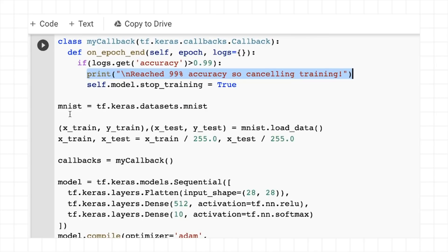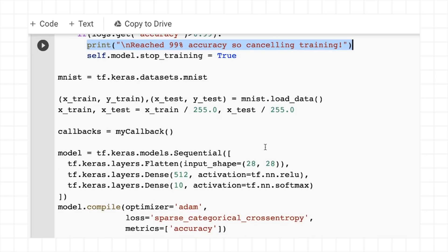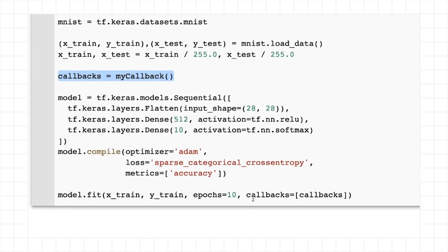So now for mnist, I can just say mnist is tf.keras.datasets.mnist, I can load and normalize my data as before. I can create an instance of my callback that I'm just calling callbacks. And then when I'm training, I can add this extra parameter called callbacks and say callbacks equals this instance of my callback.